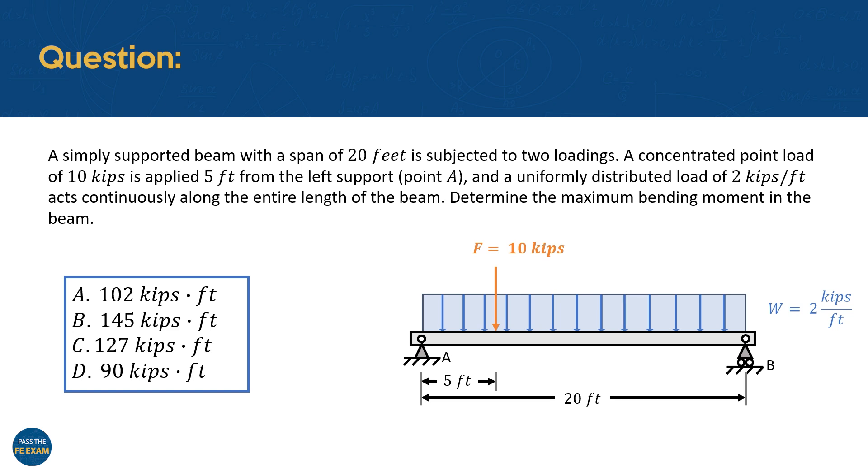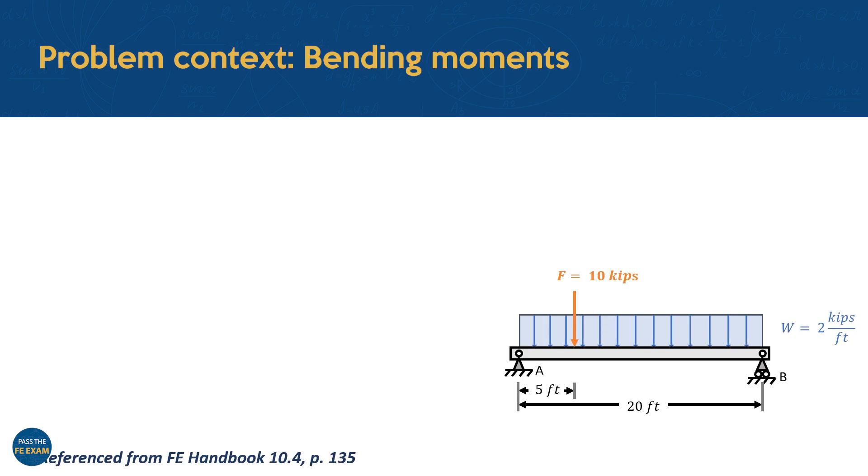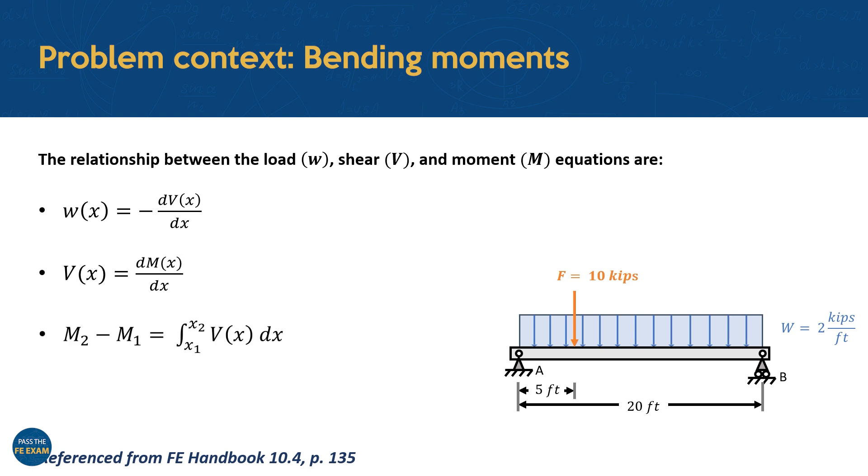To evaluate this problem, we'll use the relationships defined by the FE handbook. According to the handbook, the shear force and bending moment in a beam are directly related to the applied loading on the system. Specifically, the load W will be equal to the derivative of the shear force with respect to x. And the shear force, V(x), is the derivative of the bending moment.